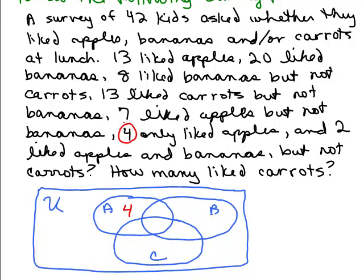Two liked apples and bananas but not carrots. Where is that? Apples and bananas — that's the intersection, but not carrots, so it's the region shared by apples and bananas but outside the carrot circle. That's a single region, so 2 goes right there. I've now used that piece of information.